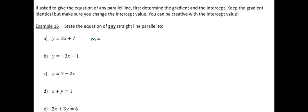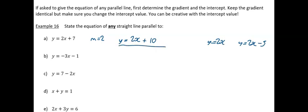The gradient is 2, so my new line is going to be y = 2x — and I could even just write y = 2x, but people don't like to leave just a gradient with no intercept, so I'll say y = 2x + 10. There are loads of valid answers: y = 2x, y = 2x − 5, anything at all — but the one I've gone for is y = 2x + 10.